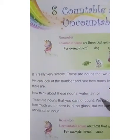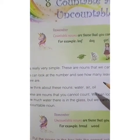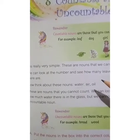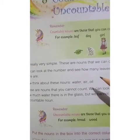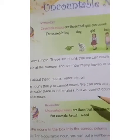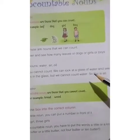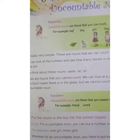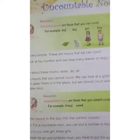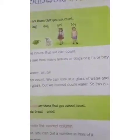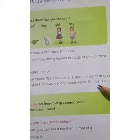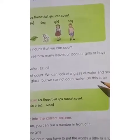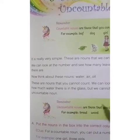But now, think about these nouns: water, air, oil. These are nouns that we cannot count. We can look at a glass of water and see how much water there is in the glass, but we cannot count water. So students, this is an uncountable noun.